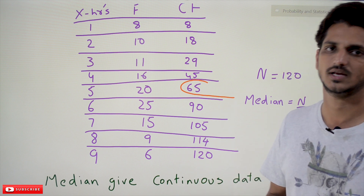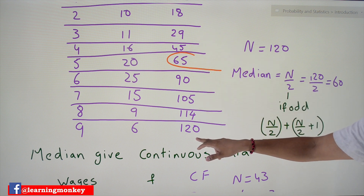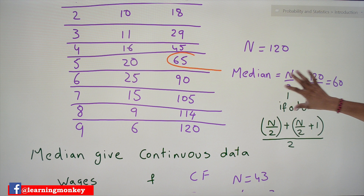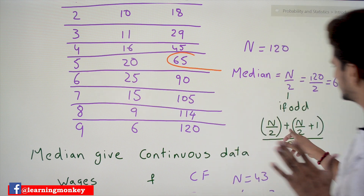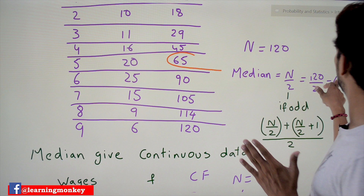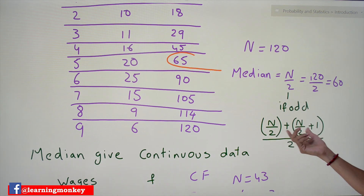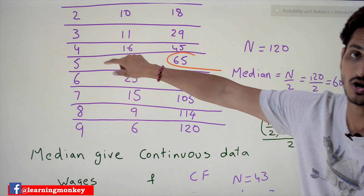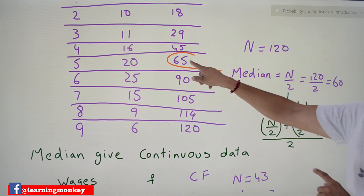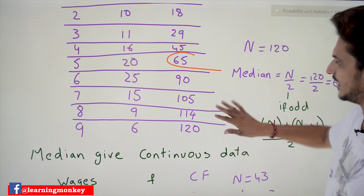You might have doubts: what if you have an even or odd number of values? If n is odd, n/2 tells you the class. If n is even, you check both n/2 and n/2 + 1 — here n/2 = 60 falls in class 5 hours, and 61 also falls in the same class, so (5 + 5)/2 = 5. We get the same value. The key is identifying which median class n/2 belongs to.